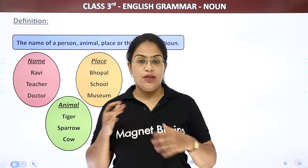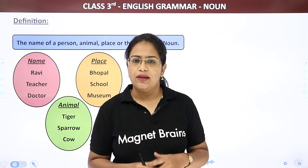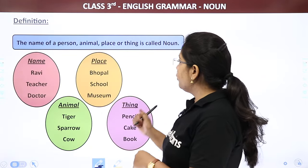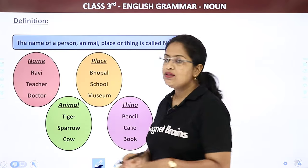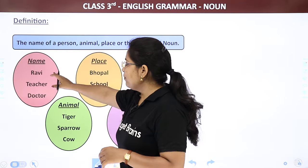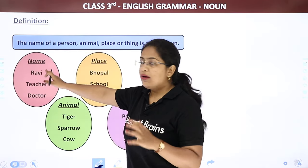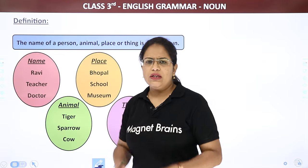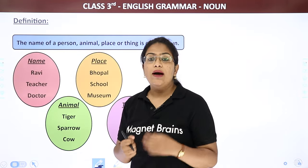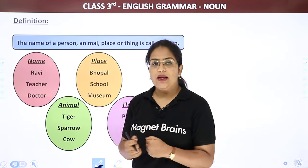You can see all of the noun categories. The definition: the name of a person, animal, place, or thing is called a noun. Some examples: name — Ravi, teacher, or doctor. A person's name, or their profession, like teacher or doctor — these all come under noun.